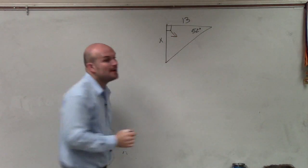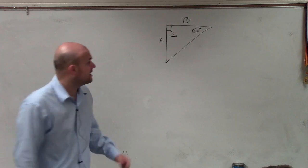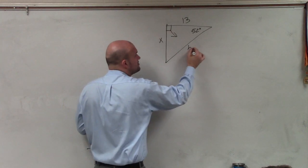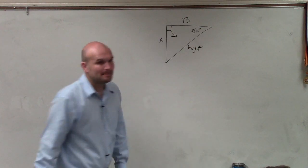Regardless of where the angle is, the hypotenuse is the easiest to identify. It's directly across from your right angle, hypotenuse.